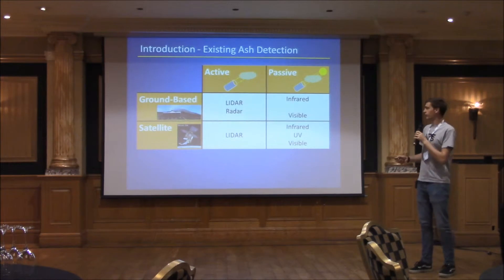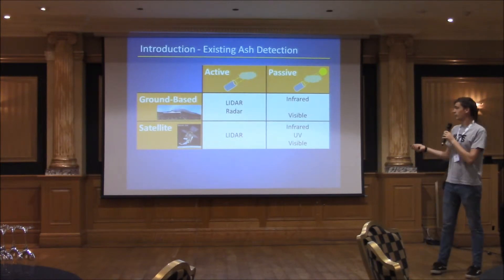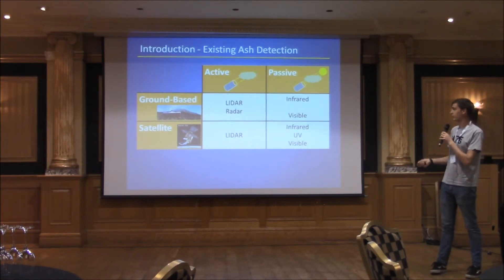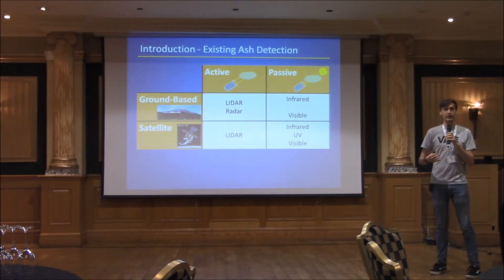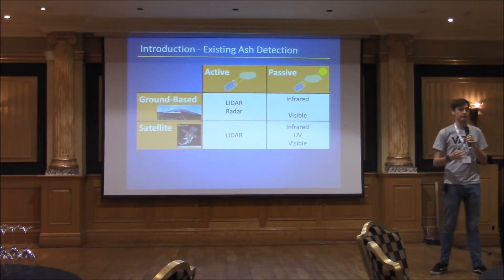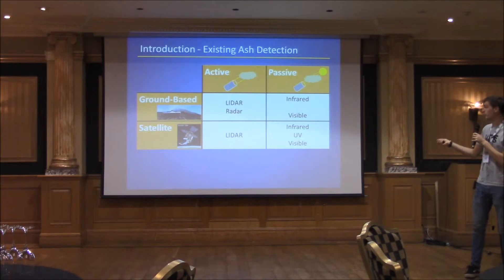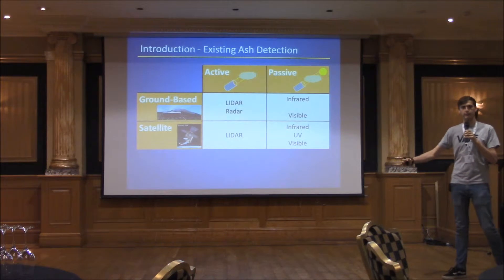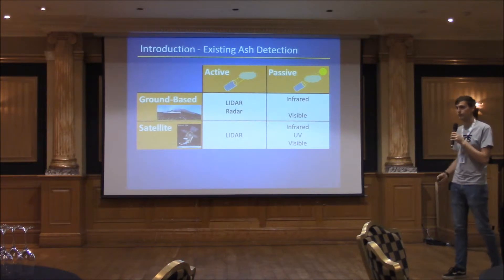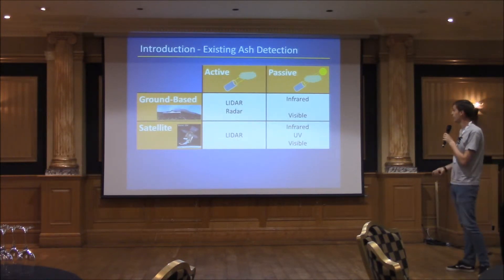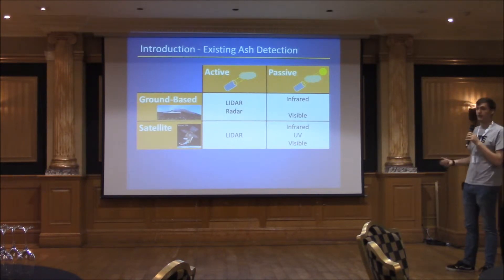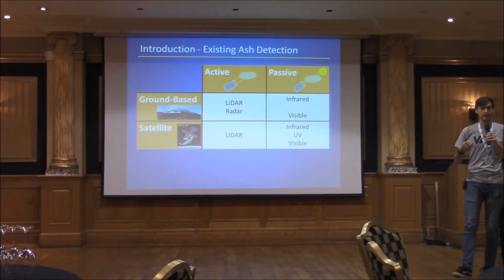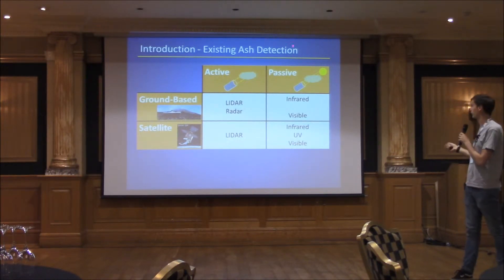So how do we detect ash at the moment? I've split this into both ground-based and satellite measurements, and also into active and passive measurements. Active is where you have a controlled light source — you output light and then measure the reflection, or output light and measure the transmission through a plume depending on the setup. Passive uses a passive light source, so in some cases the sun.